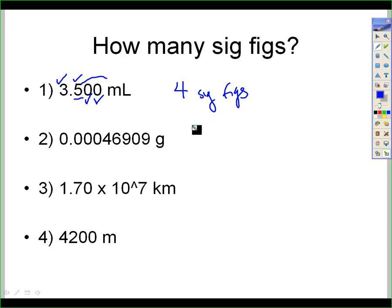Number two, the answer is five sig figs. These zeros are considered at the beginning of the number because they precede the first non-zero number, which in this case is four. So none of these zeros count. The four and the six and the nine count. This zero is between two non-zero numbers, so those zeros always count. And this nine counts. That's how we get five.